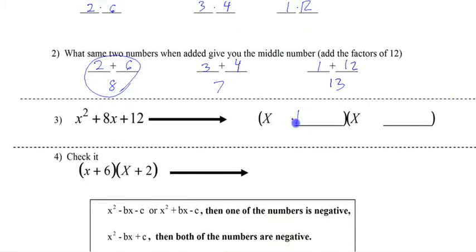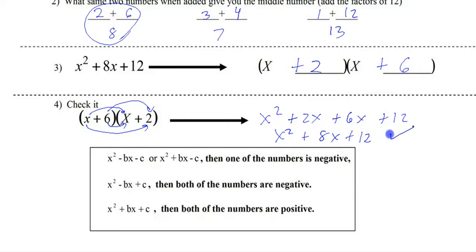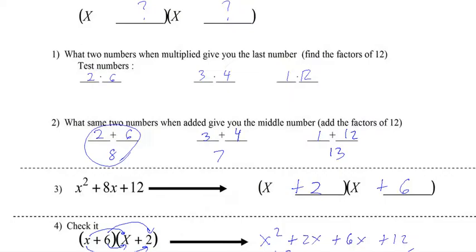So that is our answer. x plus 2, x plus 6. How do we know it's correct? We just multiply it out. So x times x, x times 2, 6 times x and then 6 times 2. And there it is, there's our check mark and that's it.